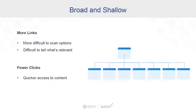With a broad and shallow structure, you present more links to the user at once. This can introduce some possible friction or confusion, because it's difficult to scan all those options. It's also tough to tell what's relevant or related, because everything is seen at the same level.